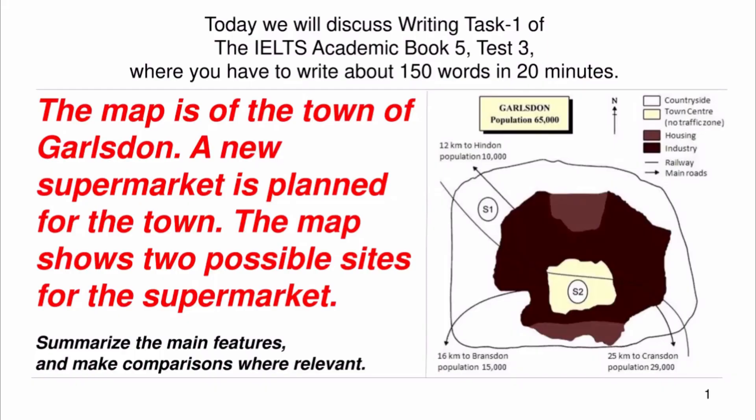Today, we will discuss writing task 1 of the IELTS academic book 5, test 3, where you have to write about 150 words in 20 minutes. The map is of the town of Garlsdon. A new supermarket is planned for the town. The map shows two possible sites for the supermarket.